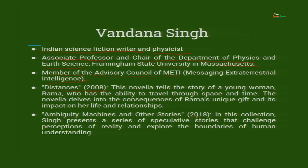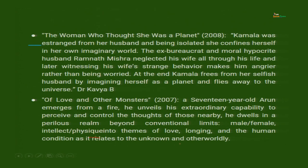Ambiguity Machines and Other Stories, published in 2018 — in this collection, Singh presents a series of speculative stories that challenge perceptions of reality and explore the boundaries of human understanding. Next, the work I was talking about — The Woman Who Thought She Was a Planet. Let us read a small excerpt from a research paper by Dr. Kavya B.: Kamala was estranged from her husband and being isolated, she confines herself in her own imaginary world. The ex-bureaucrat and moral hypocrite husband Ramnath Mishra neglected his wife all through his life, and witnessing her strange behaviour makes him angrier rather than worried. At the end, Kamala frees herself from her selfish husband by imagining herself as a planet and flies away to the universe.